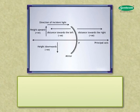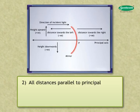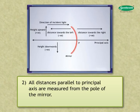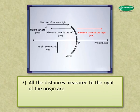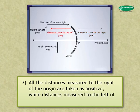Three, all distances measured to the right of the origin are taken as positive, while distances measured to the left of the origin are taken as negative.